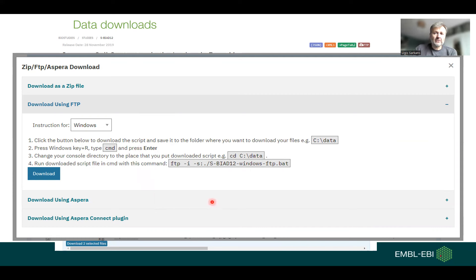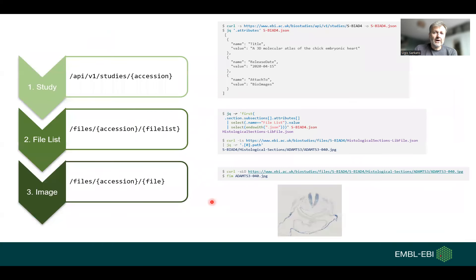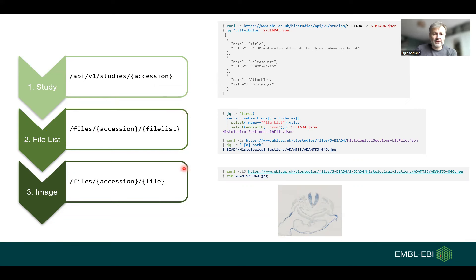Download is offered by a variety of routes: zip file, FTP, Aspera. We recently also added Globus downloads. And there is an API, where usually there is a three-stage process: retrieve a JSON description of the entire dataset, retrieve file descriptions if there are lots of files associated to that dataset, and then retrieve individual files.